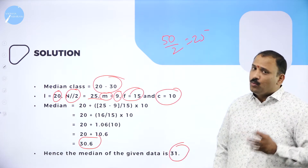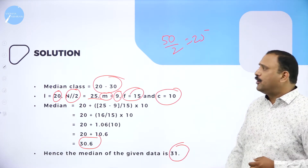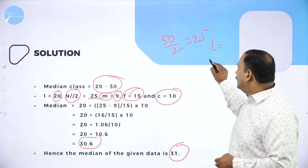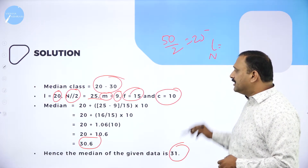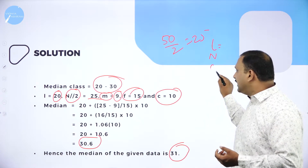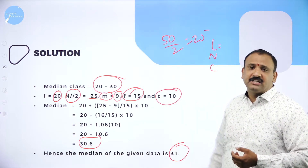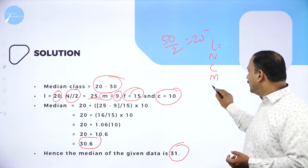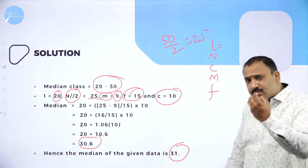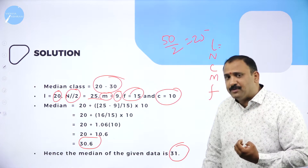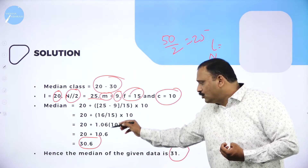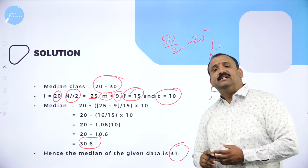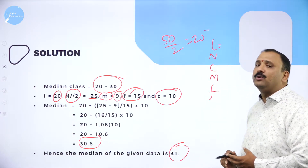What we have done is use the lower value l, the n value, the c value, and m — the cumulative frequency — along with f, the frequency corresponding to that class. Substituting into the median formula directly gives us the answer: 30.6, rounded up to 31.